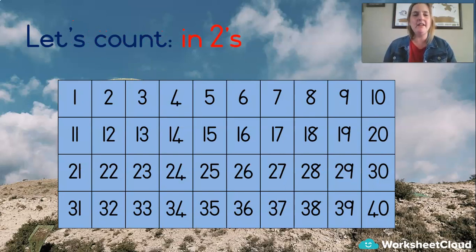Okay, let's count in twos now. Starting at number two, we're going to skip over all the odd numbers. Let's go. 2, 4, 6, 8, 10. Count with me. 12, 14, 16, 18, 20, 22, 24, 26, 28, 30, 32, 34, 36, 38, 40. Great.